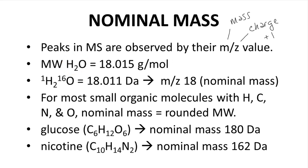Let's look at water. Water has a molecular weight, a molecular mass, of 18.015 grams per mole. That number reflects a statistical average of all the isotopes of hydrogen and oxygen. Mass spec does not detect a statistical average — it detects individual molecules with specific isotopes. By far, most individual water molecules consist of one oxygen-16 atom and two hydrogen-1 isotopes, giving a mass of 18.011 Daltons. The parent ion would appear at an m/z of 18. This total mass, as the sum of each of the most common isotopes, is called the nominal mass.